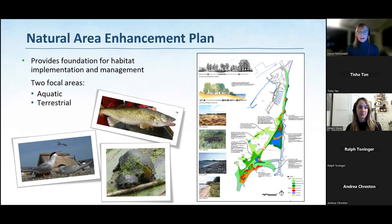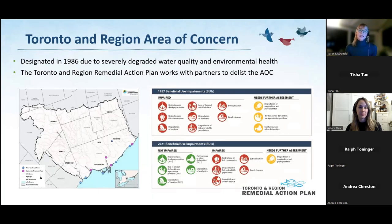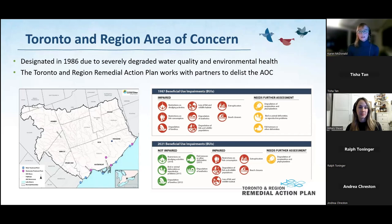Before we go into the enhancement projects, we need to cover a couple of other relevant initiatives. The first is that Toronto and region is part of an Area of Concern — a federal, binational designation indicating the environmental degradation of the area. The Toronto and Region Area of Concern extends along the north shoreline of Lake Ontario, from the Rouge River in the east to Etobicoke Creek in the west, covering about 2,000 square kilometres and including six watersheds as well as the Lake Ontario shoreline. The Toronto Region AOC was designated in 1986. Going from 1987 when we had a total of eight beneficial use impairments, we're now down to only five. This is positive progress.